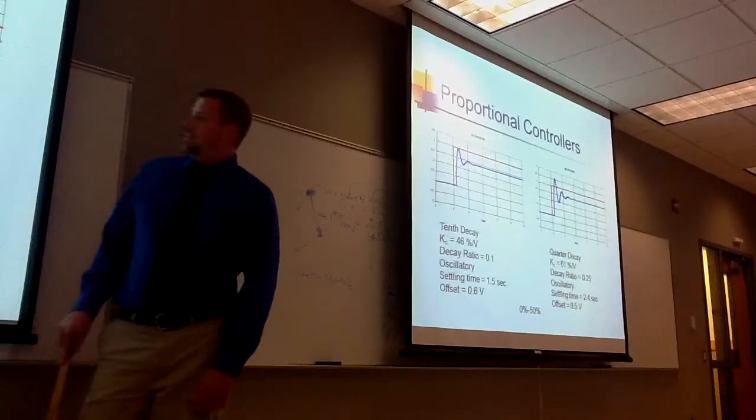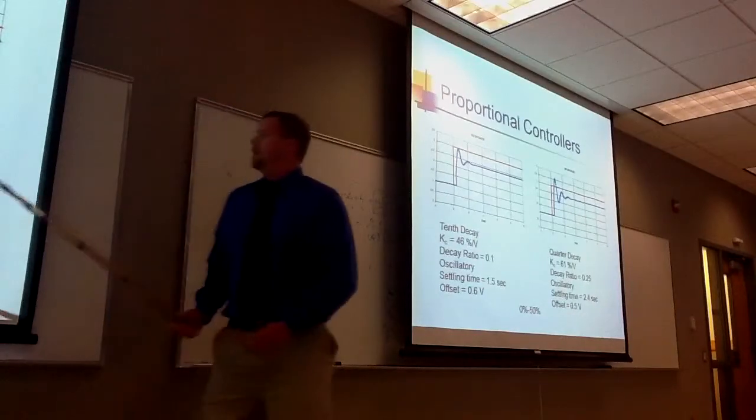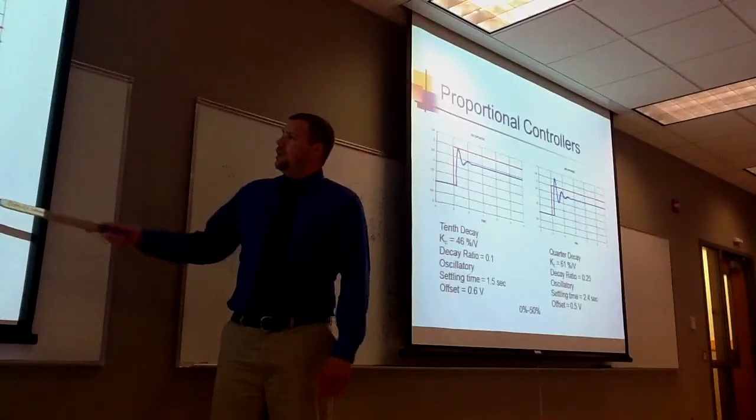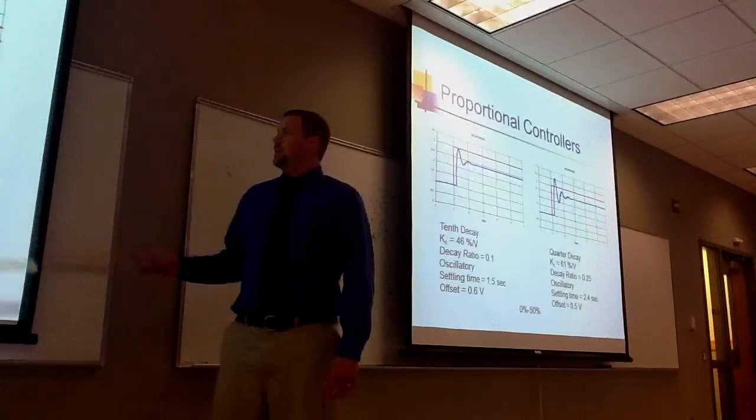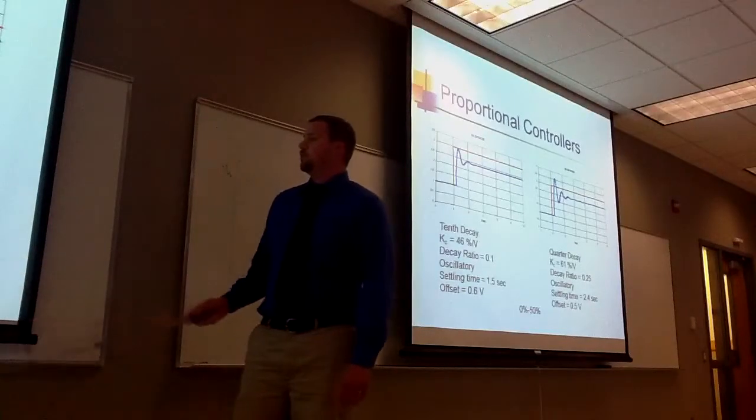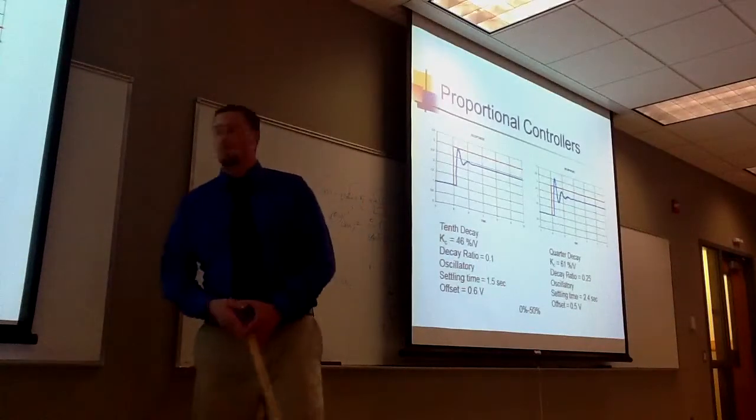And in the quarter decay, you can see that there's a lot more overshoot. Our KC is 61% per volt. A settling time of 2.4 seconds. An offset of 0.5 volts.